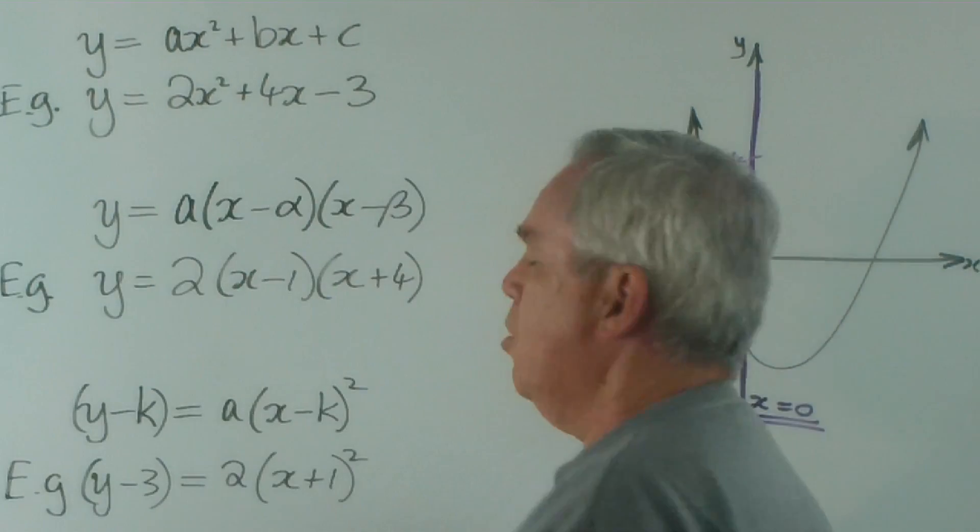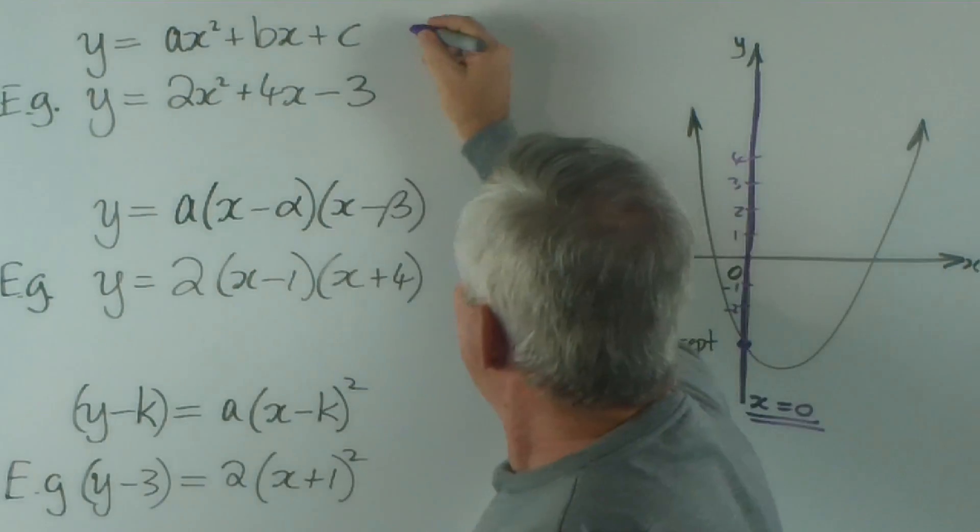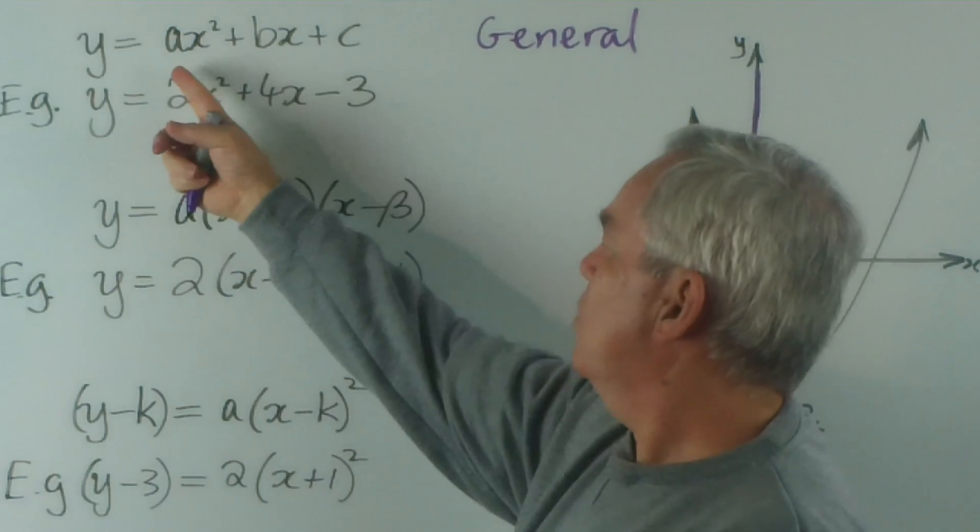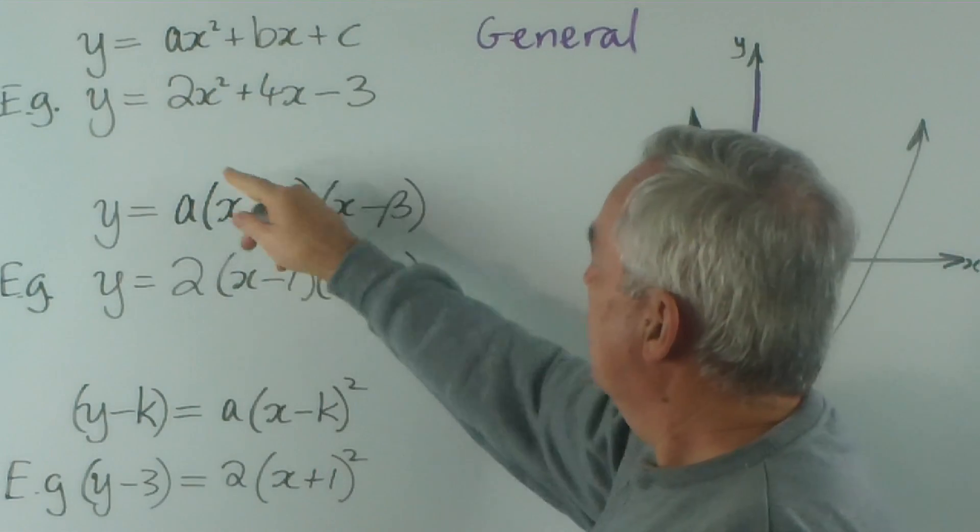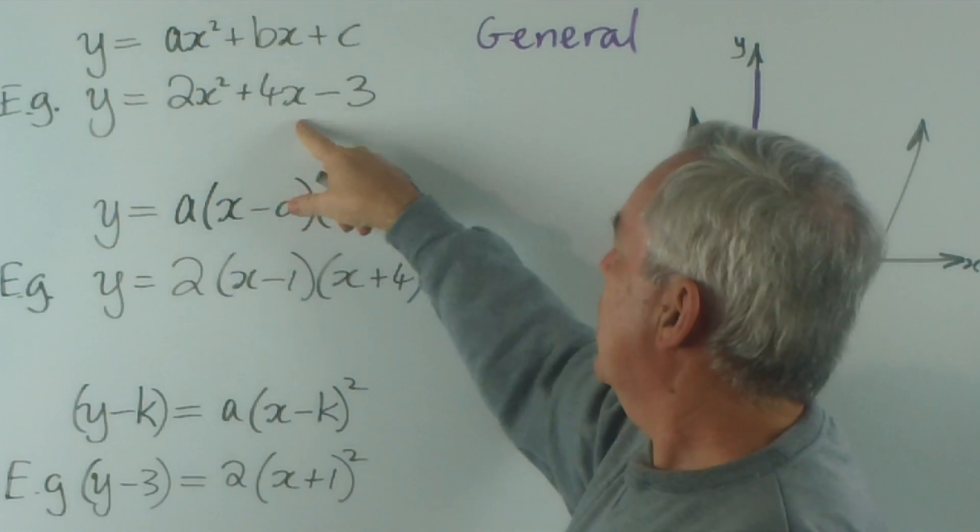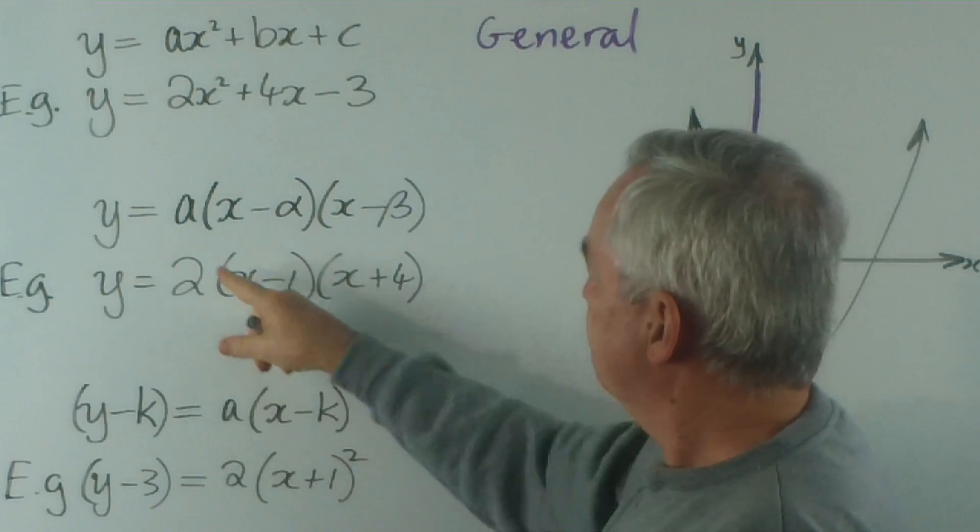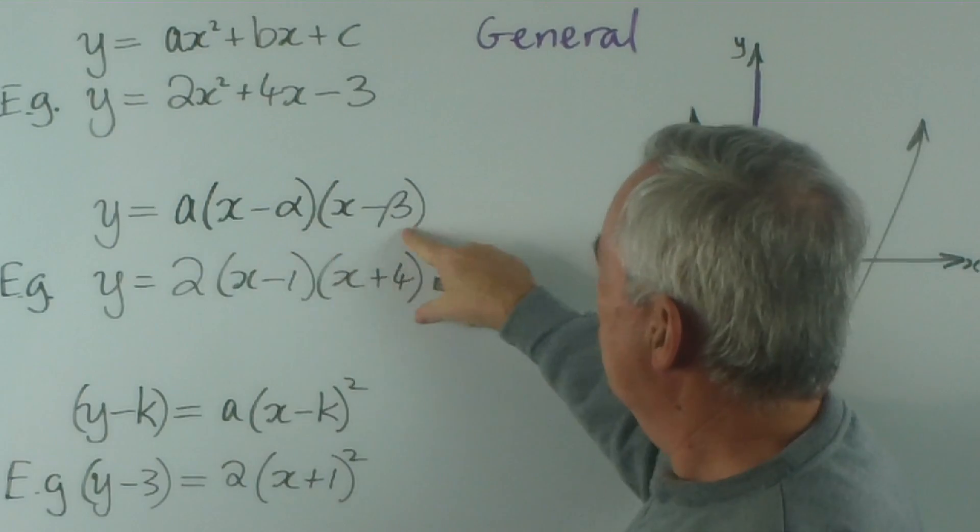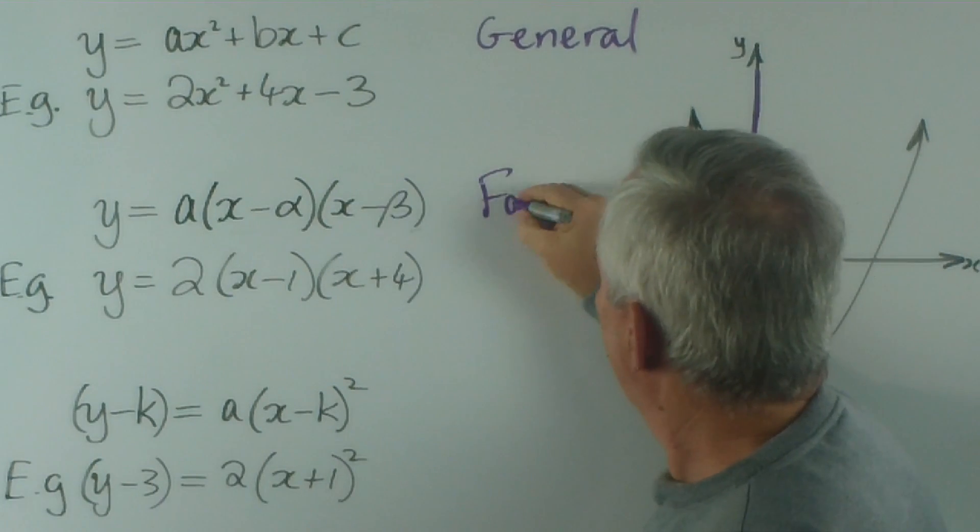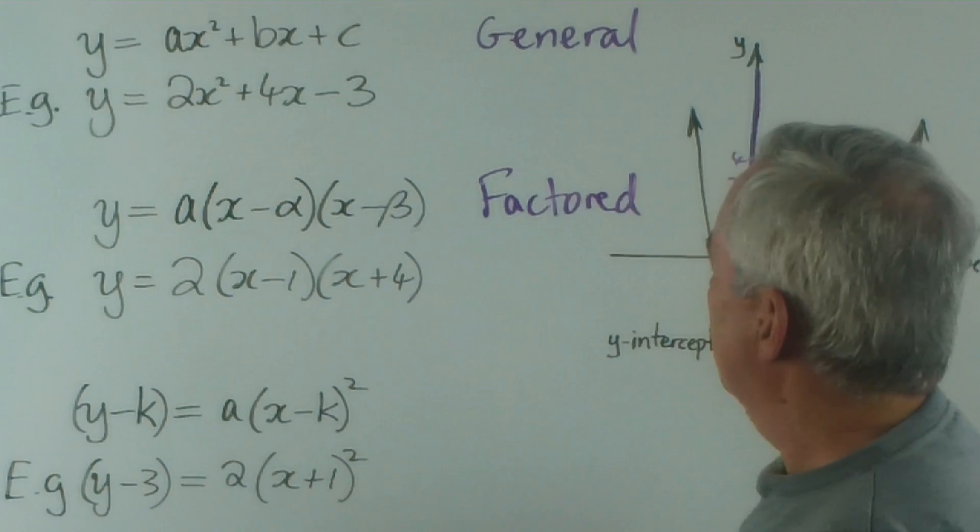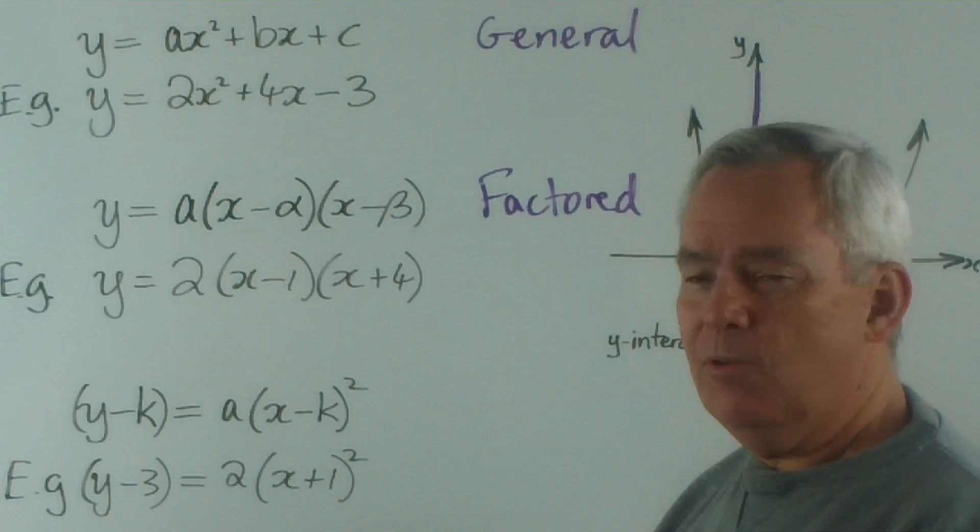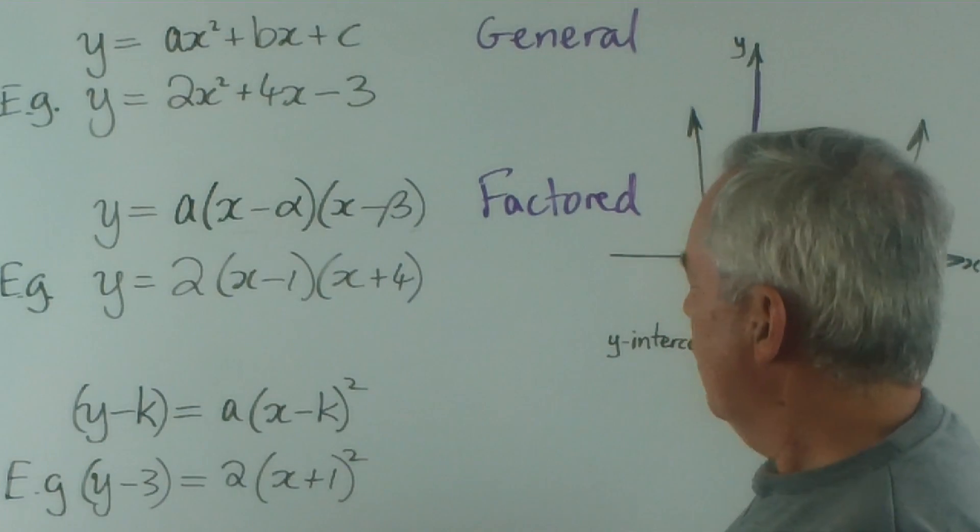I've written up here the three common forms. This one is called the general form for the quadratic equation. We typically see it written as ax² + bx + c. I've written an example here: -7x² - 21x + 11. This form, where we have two binomial expressions multiplied together, is called the factored form, and I've given an example: 2(x - 1)(x + 4).